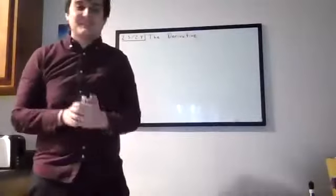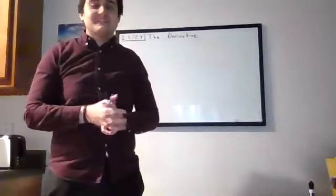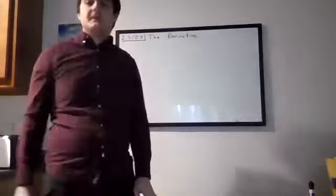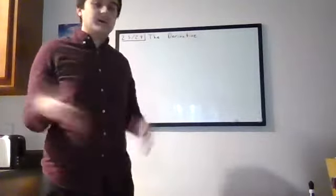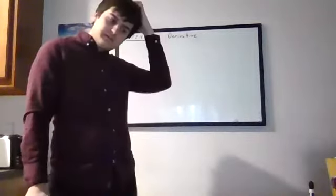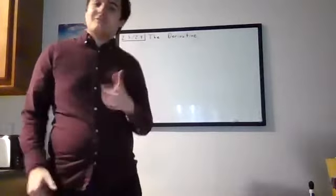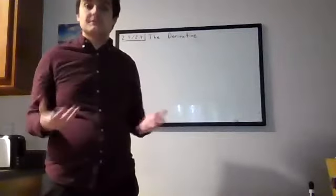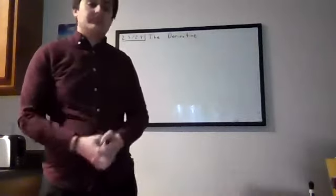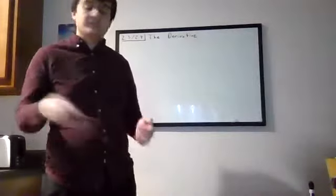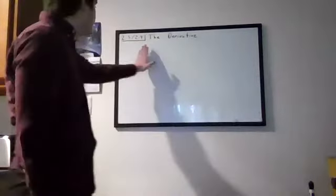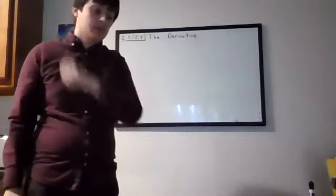Welcome back to the third video of our California technology class. We started out talking about functions and intervals — putting numbers on a line and running them through a machine. We studied interesting behavior using limits to understand that even if a value doesn't exist at a point, we can assert certain behavior there. Today we're going to use that definition of a limit to find something called the derivative.